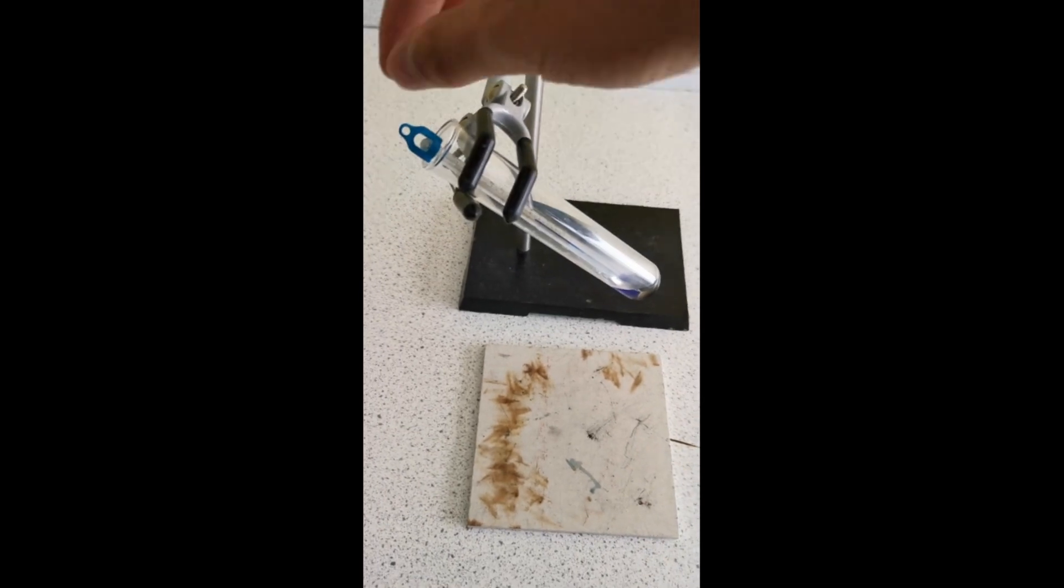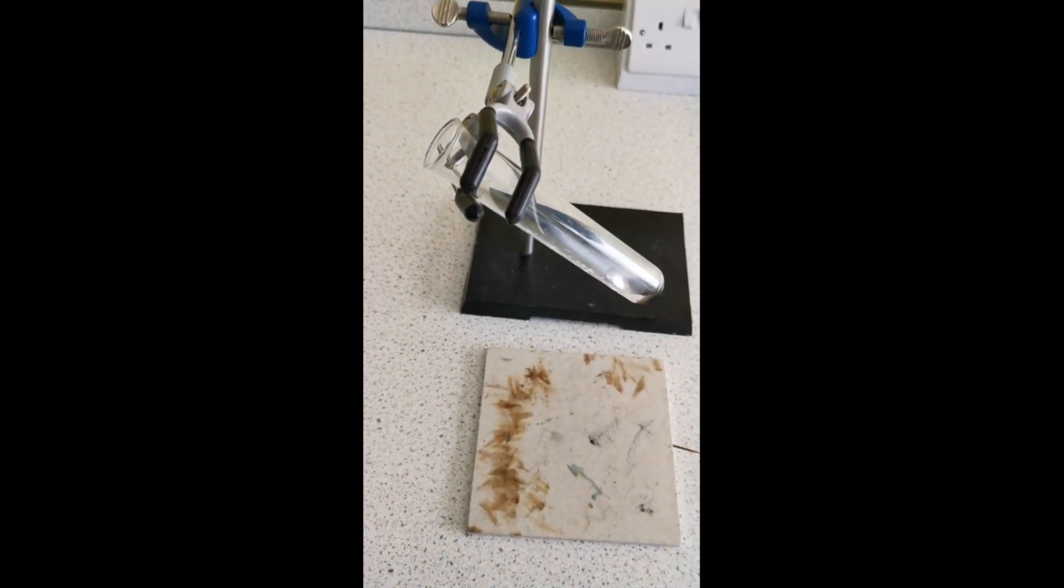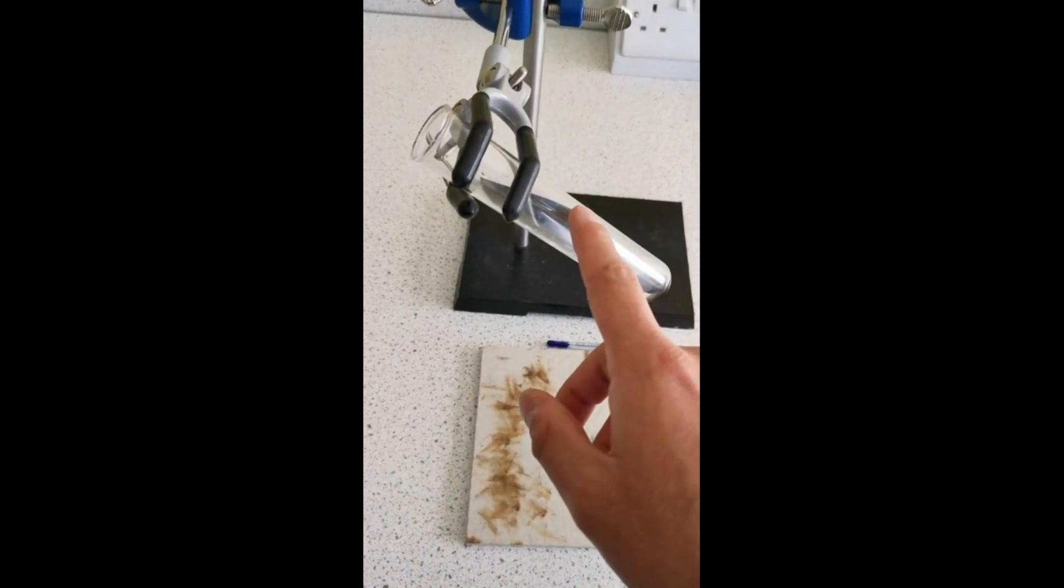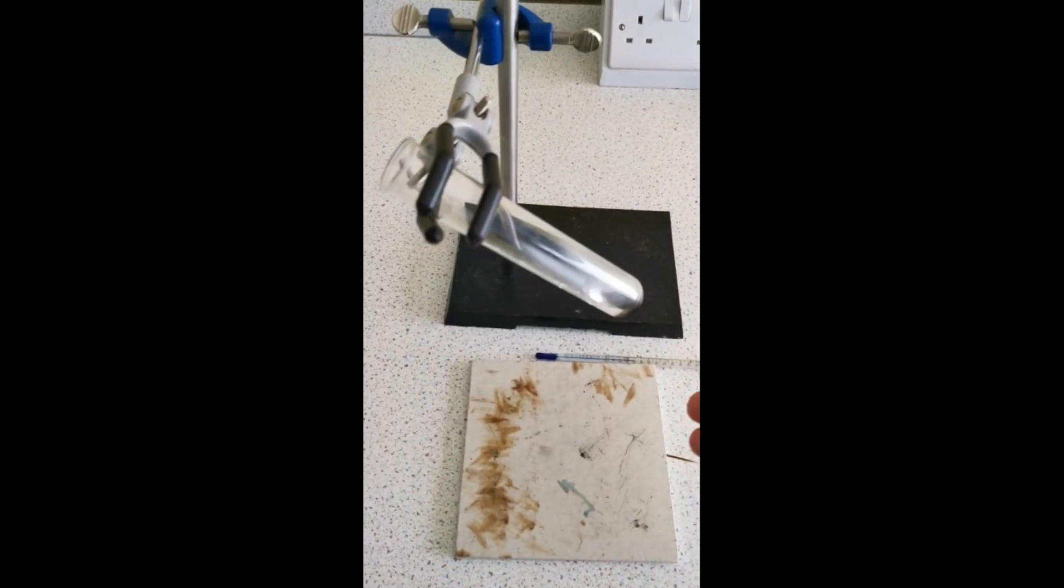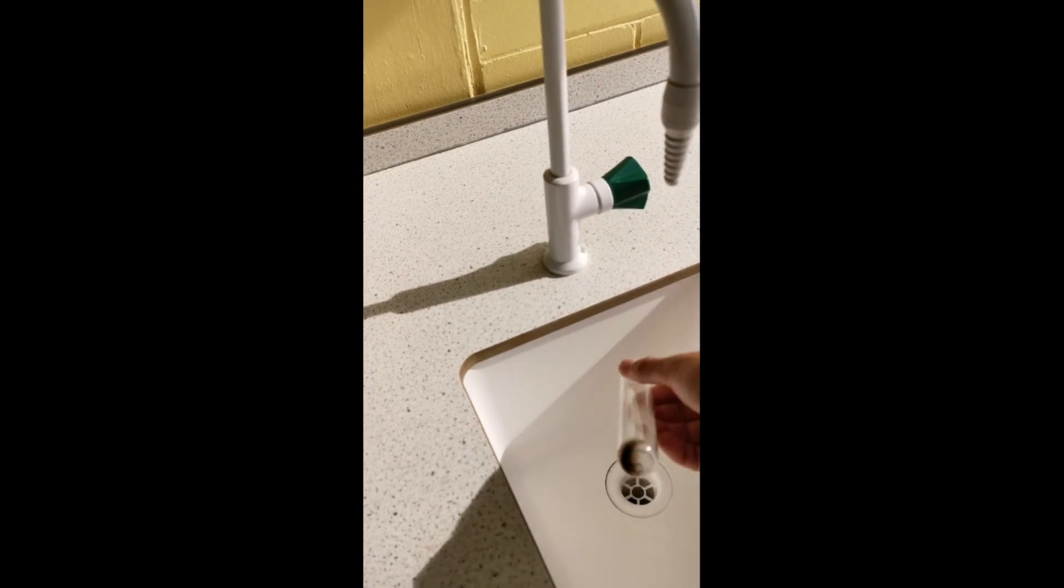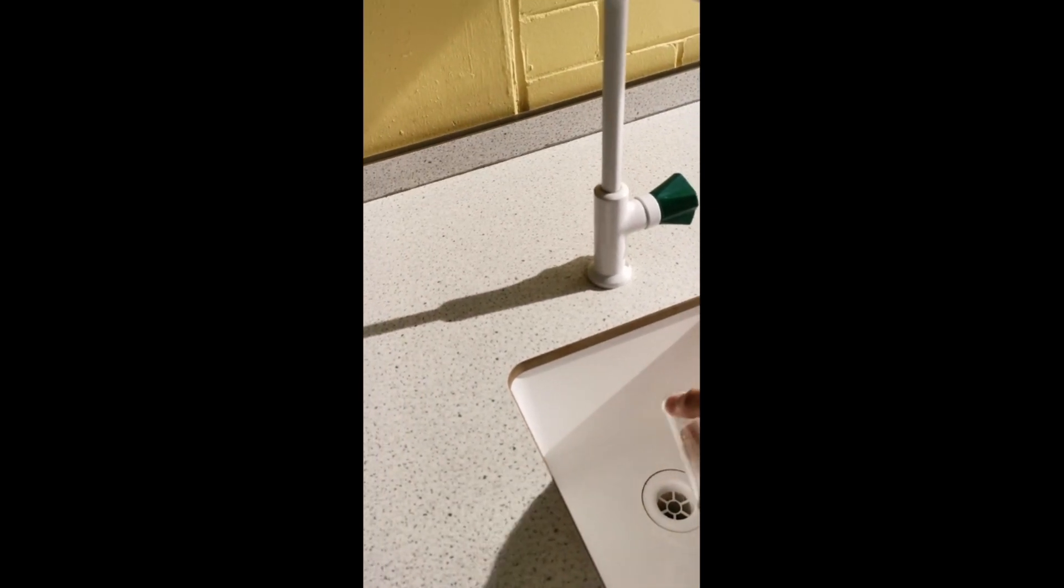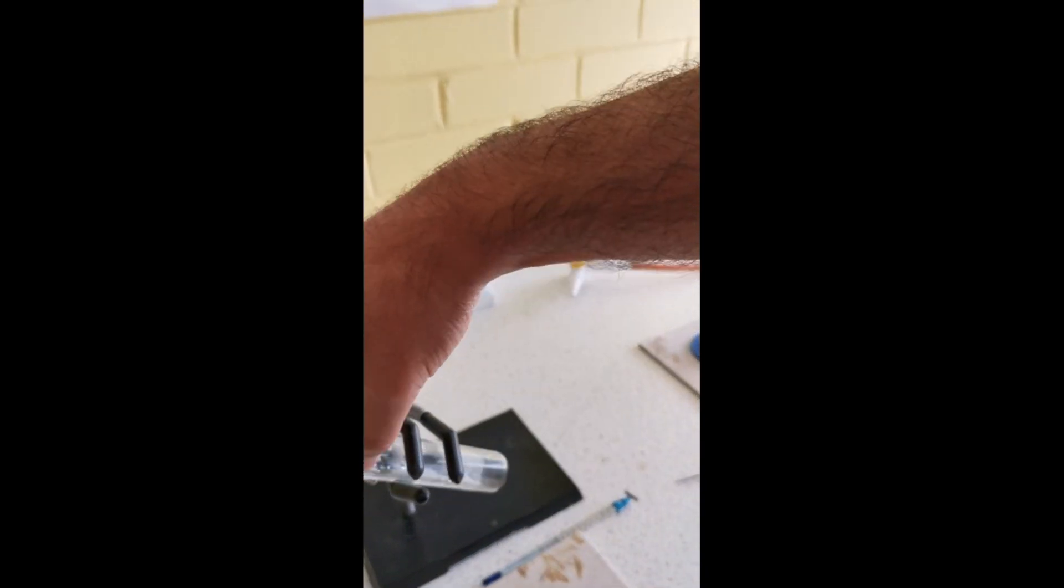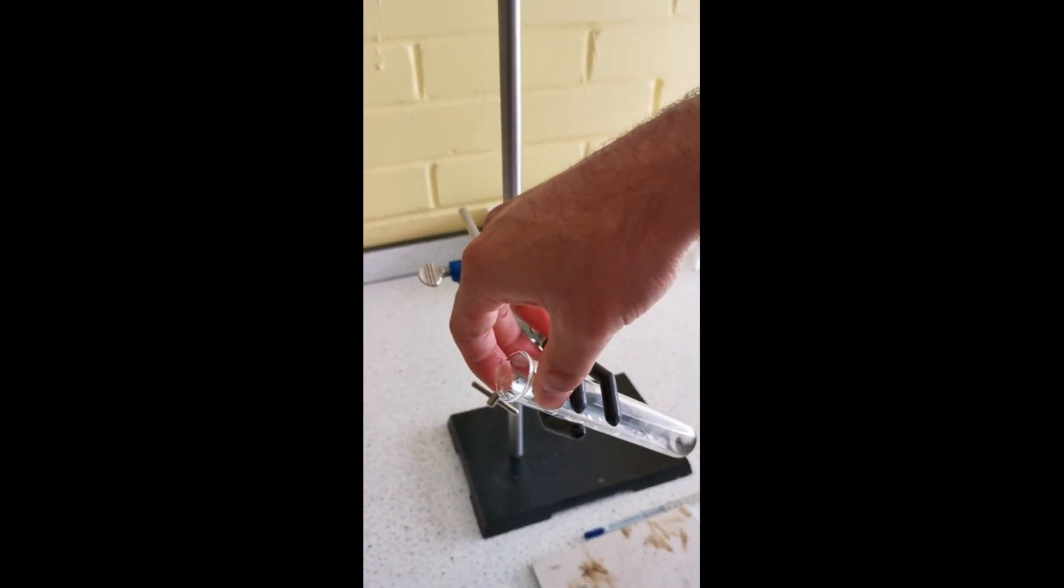Now we're done. We want to take the thermometer out and put it somewhere that it can't roll off the table. We want to change this water. Make sure the boiling tube is not hot, then remove it from the clamp stand, pour the warm water into the sink. Then it's ready to go again because we want to use fresh water each time so it starts at the same temperature.